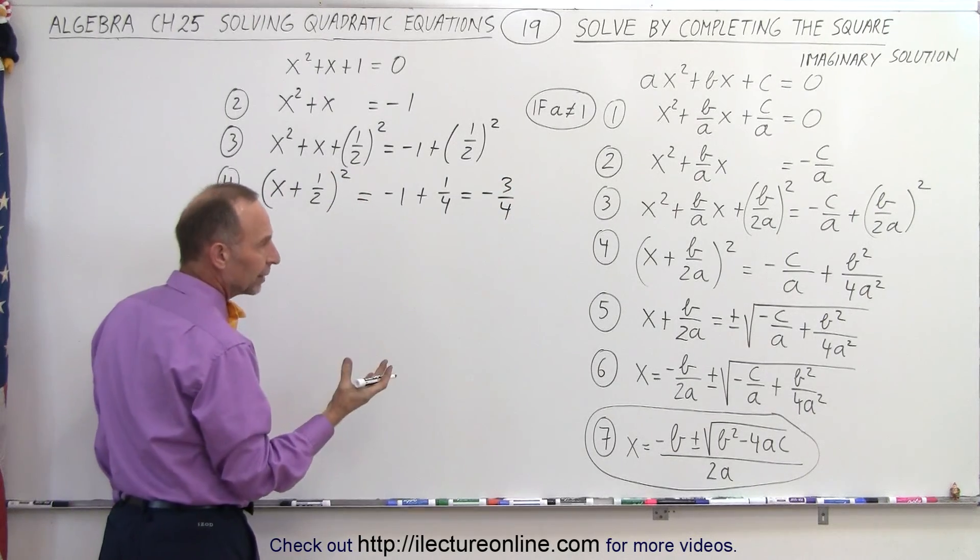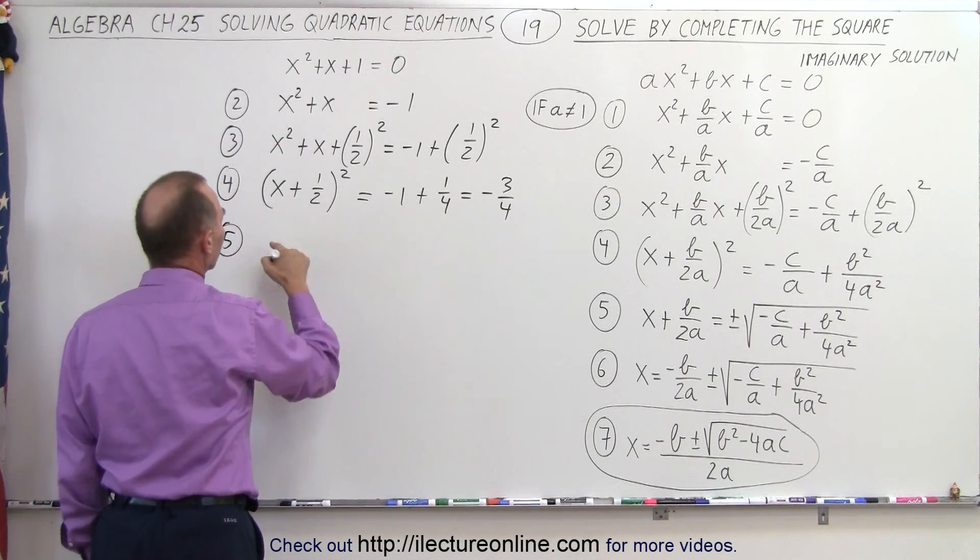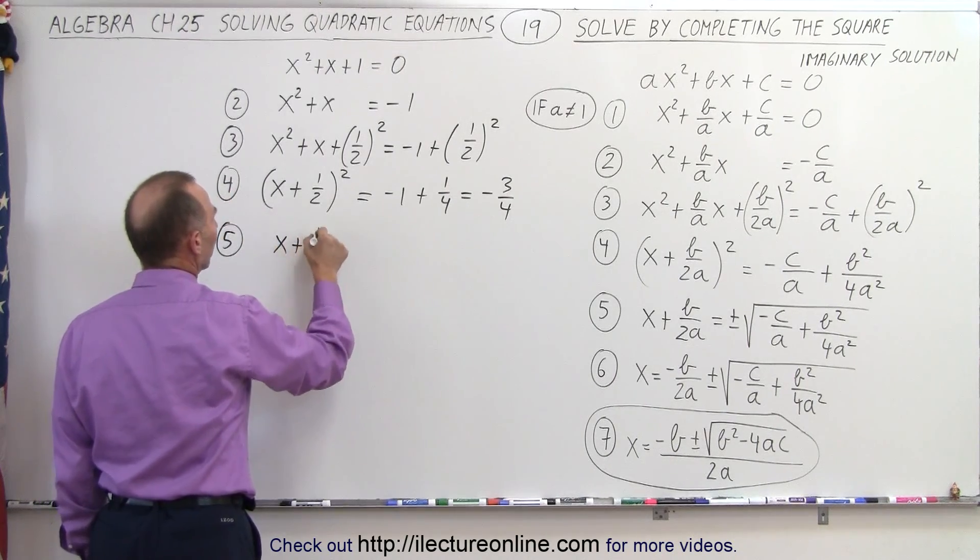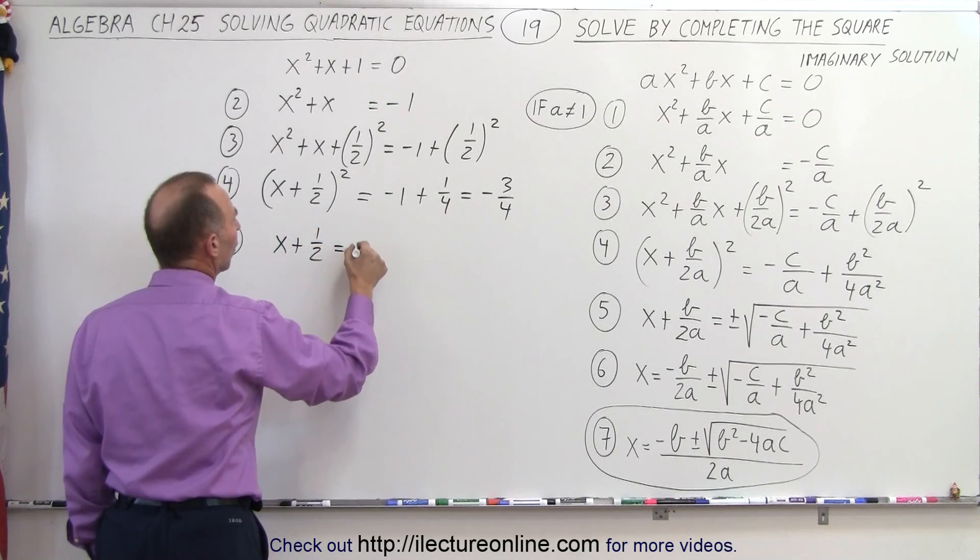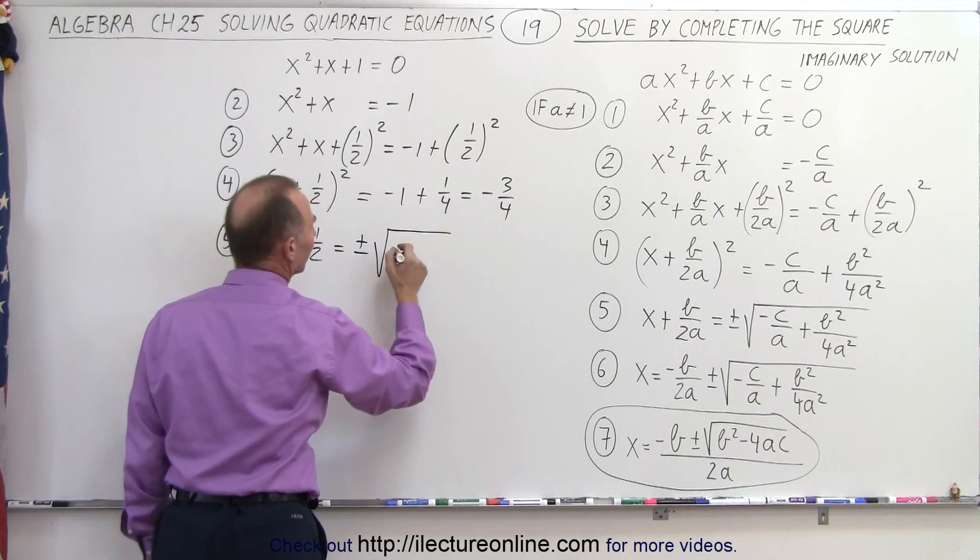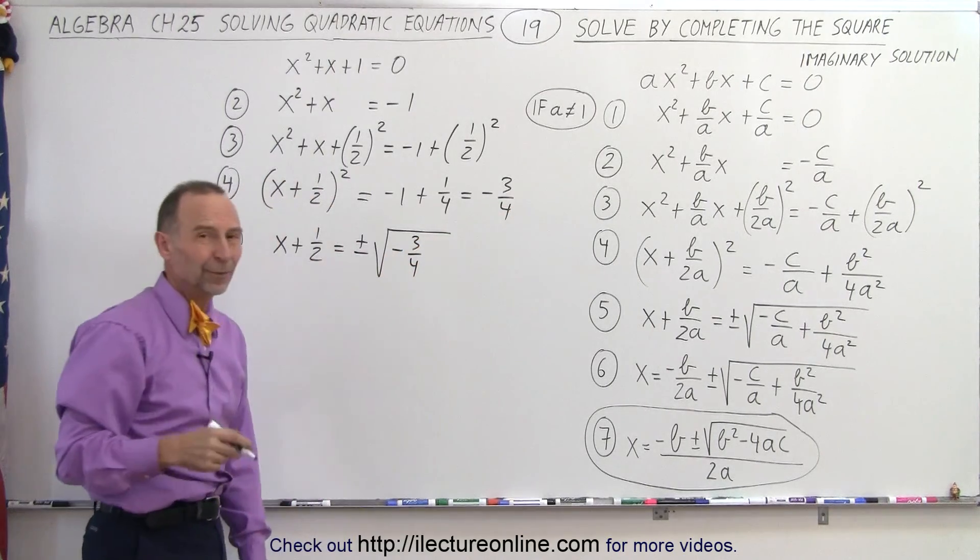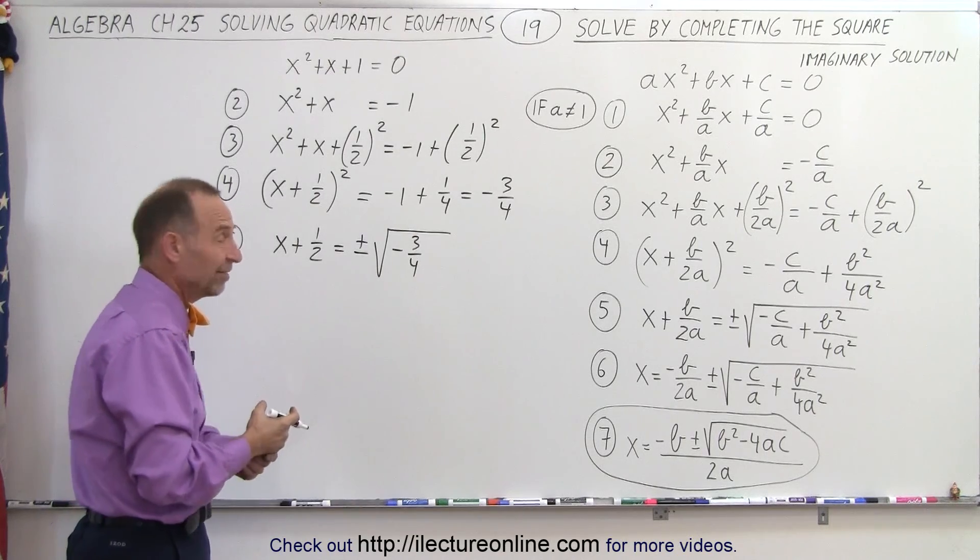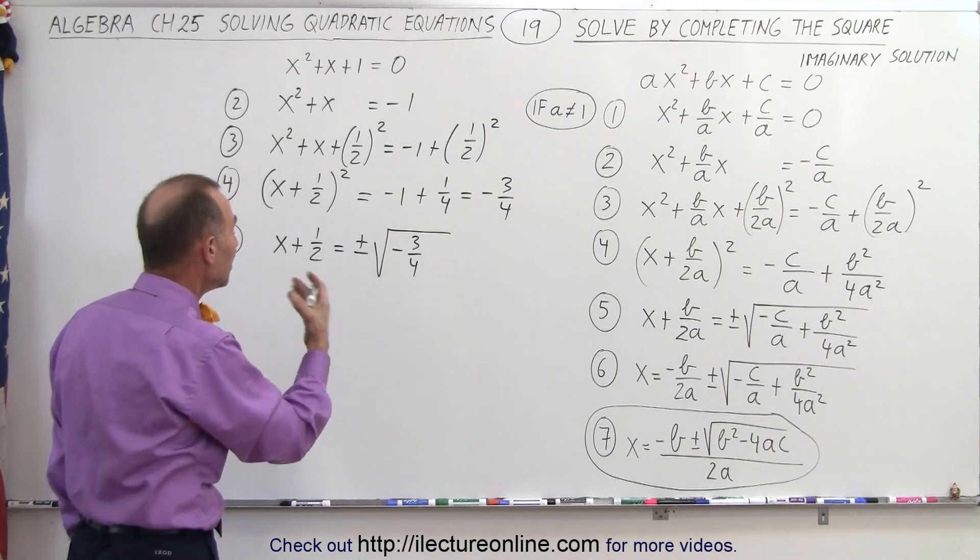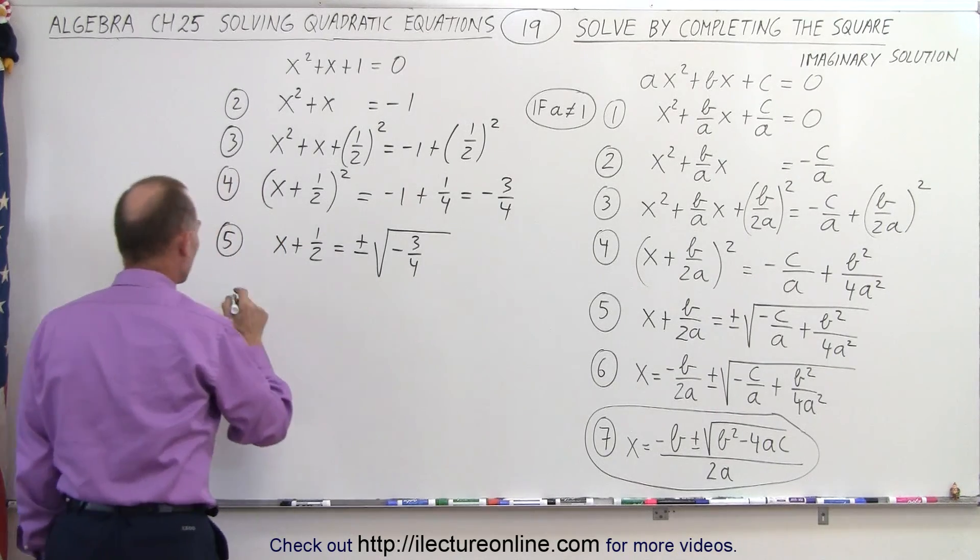Now we can take the square root of both sides. So on step number 5, we take the square root of the left side, and we get x plus 1 half is equal to plus or minus the square root of what's on the right side, which is minus 3 over 4. And that's the key here. We're taking the square root of a negative number, which is not possible—that is an imaginary number. So we'll go ahead and take care of that in just a moment.